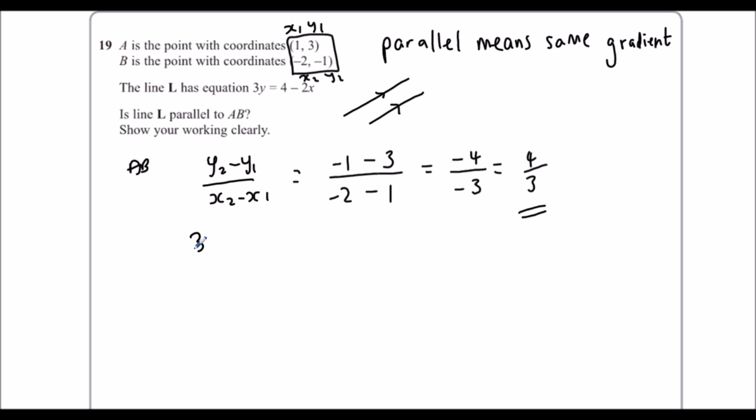For line L, we know it's 3y = 4 - 2x. Now it's hard to tell from this, but what you should know is the gradient of a straight line is in the form y = mx + c, where m is the gradient. So we need to rearrange what they've given us so it's in the right form.